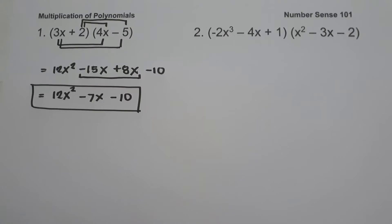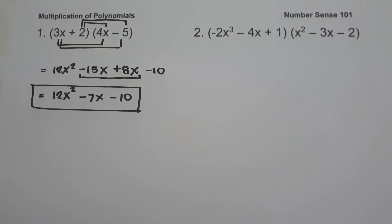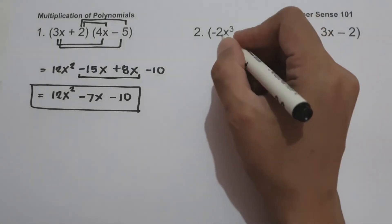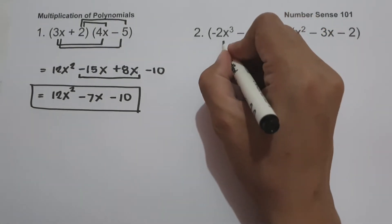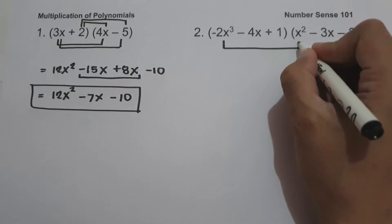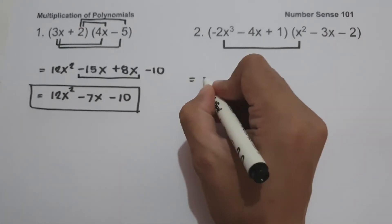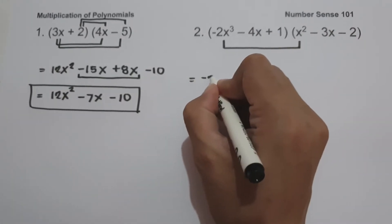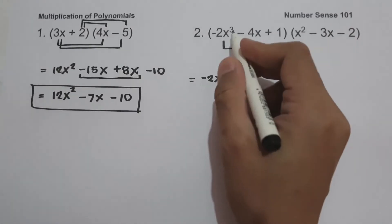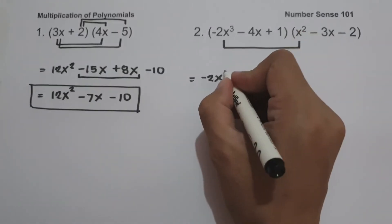On example number two, we have the quantity negative 2x cubed minus 4x plus 1 times the quantity x squared minus 3x minus 2. Let us use distributive property to simplify this one. Negative 2x cubed multiplied by x squared: copy the variable x and add the exponents, giving negative 2x raised to 5.